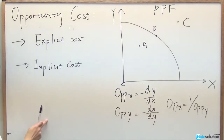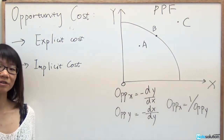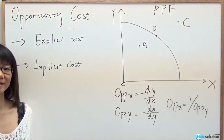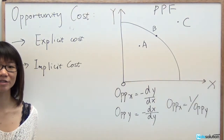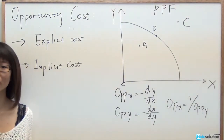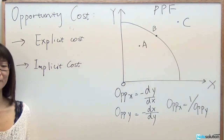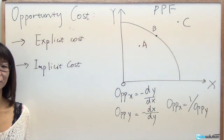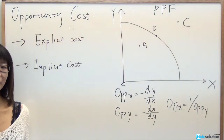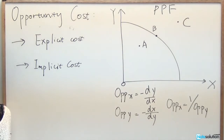One example: you have two choices. The first choice is to consume a burger, and the second choice is to consume Coke. If you choose to buy a burger, the value or joy that you gave up for the Coke is your opportunity cost.